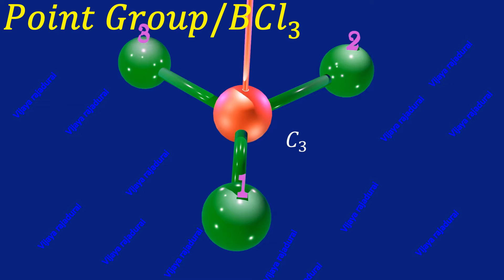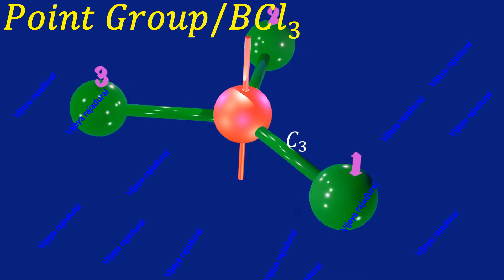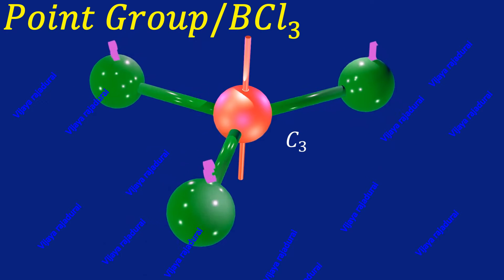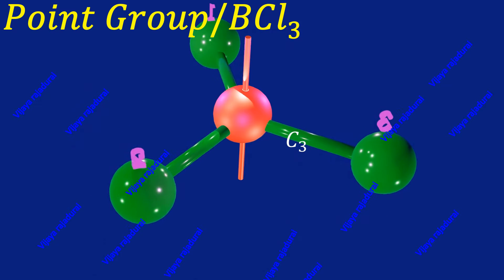The BCl3 molecule has a C3 axis since it gives three equivalent rotations about the orientation of the molecule axis.